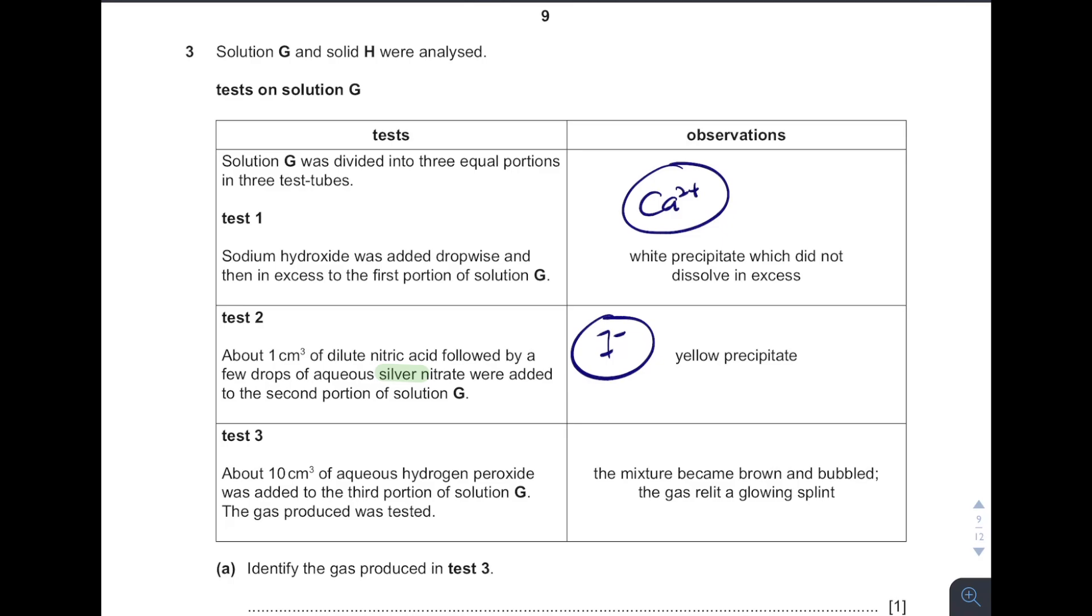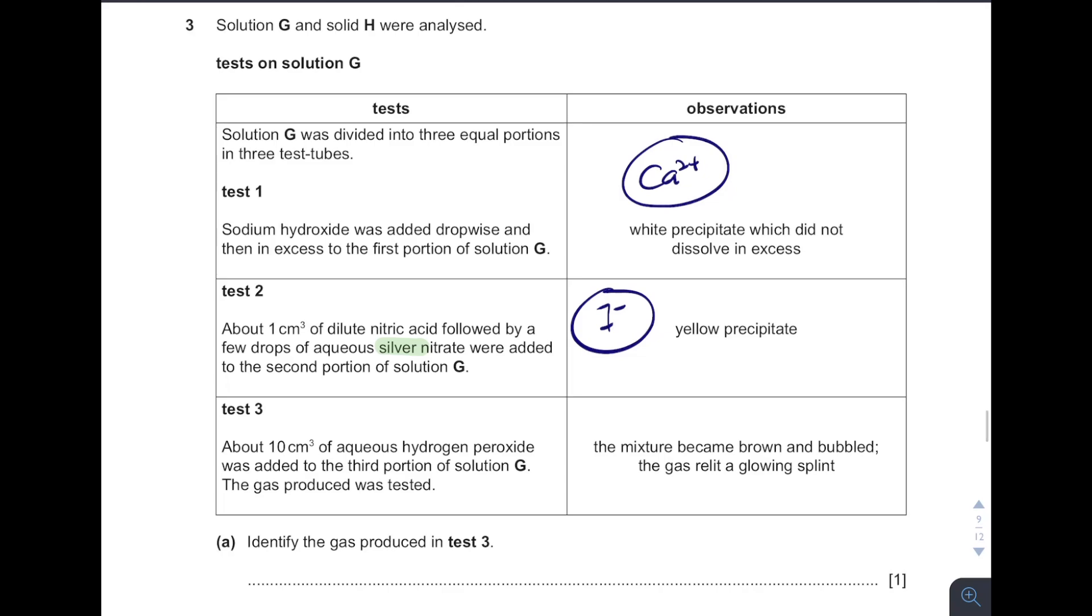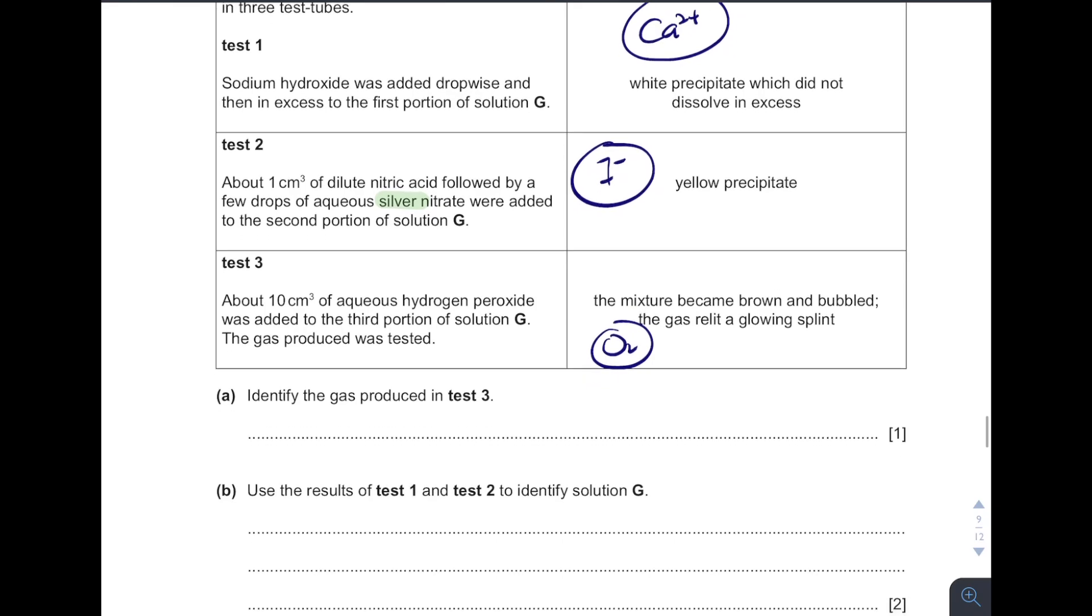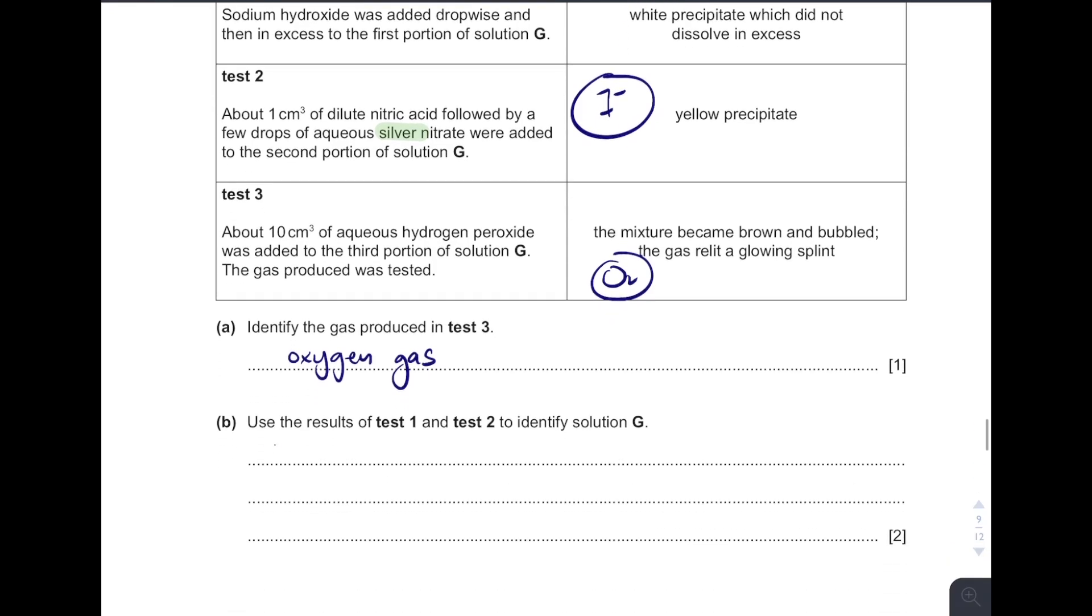Then about 10 cm cubed of aqueous hydrogen peroxide was added. The gas produced was tested. The gas produced, it relit a glowing splint. It produces oxygen gas. Only oxygen can relight a glowing splint. So what is the gas produced in test three? From this you know that it is oxygen gas. And then identify G based on test one and test two. So it is calcium iodide.